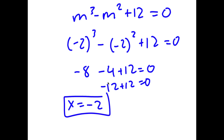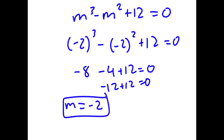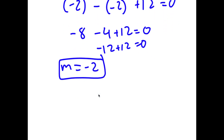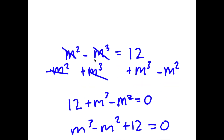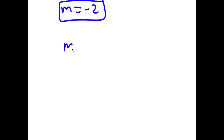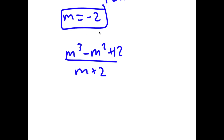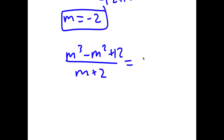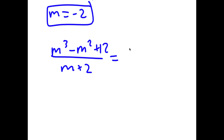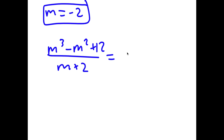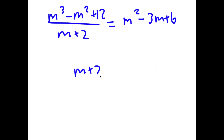So now that I know negative 2 is a solution, I can use this to find the rest of the solutions by dividing my equation m to the power of 3 minus m squared plus 12 by m plus 2, because m plus 2 is the same thing as saying m equals negative 2 is a solution. This gives m squared minus 3m plus 6. So now we have m plus 2 times m squared minus 3m plus 6 is equal to 0.